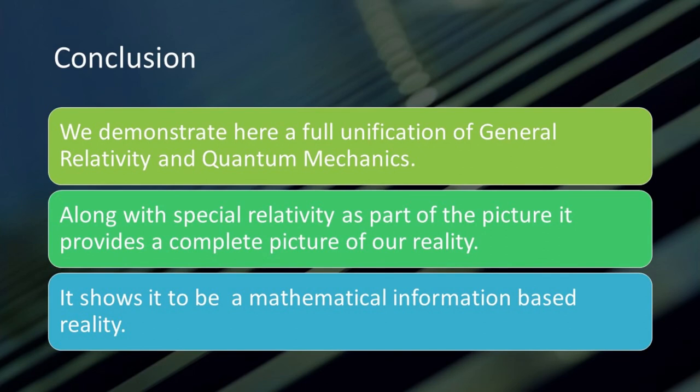We demonstrate here a full unification of general relativity and quantum mechanics. Along with special relativity as part of the picture, it provides a complete picture of our reality. It shows it to be a mathematical, information-based reality.